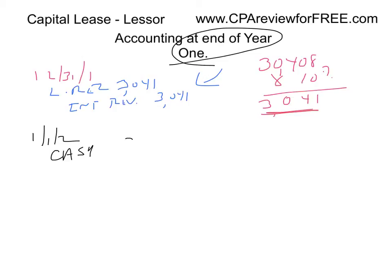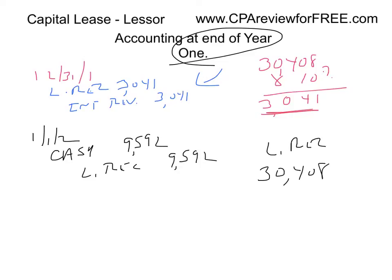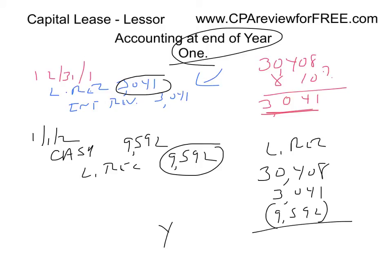On January 1, Year 2, the next payment is made: debit Cash $9,592 and reduce Lease Receivable by $9,592. To track the lease receivable: it started Year 1 at $30,408, we added $3,041 of interest at year-end, then subtracted the $9,592 payment. Going into Year 2, the lease receivable balance is $23,857.